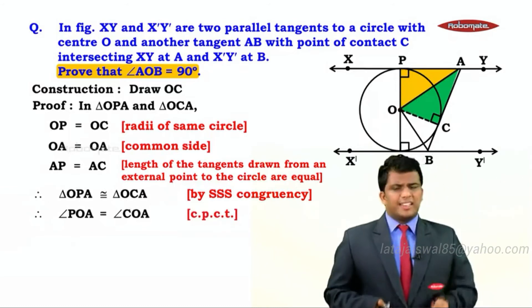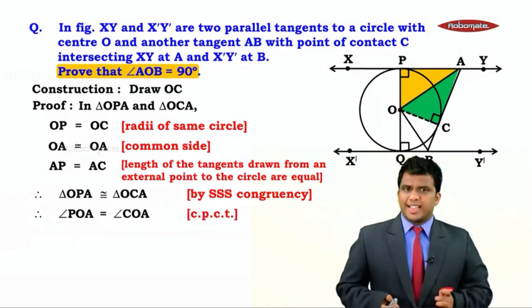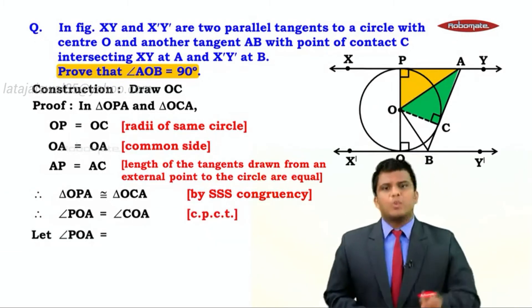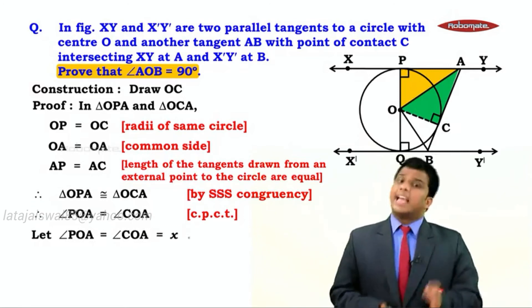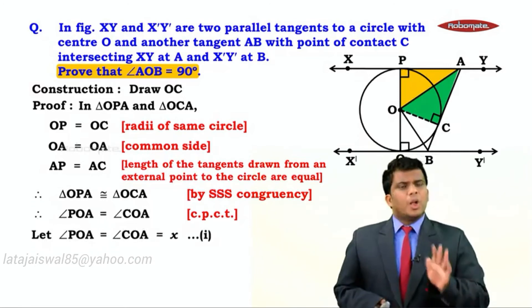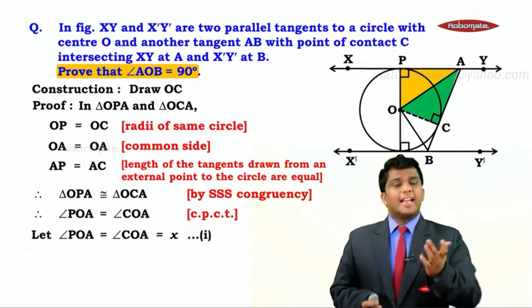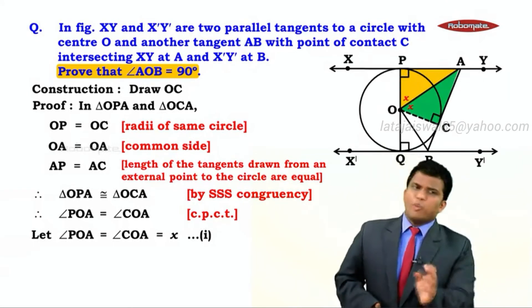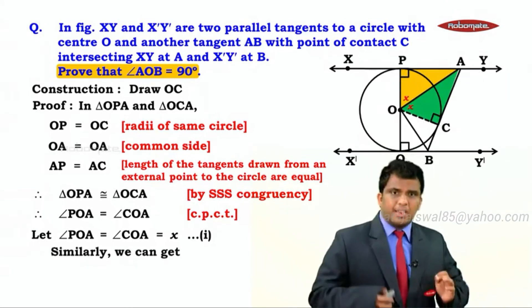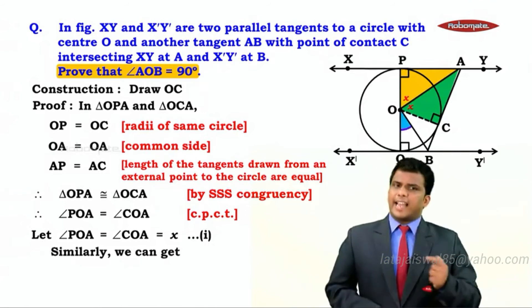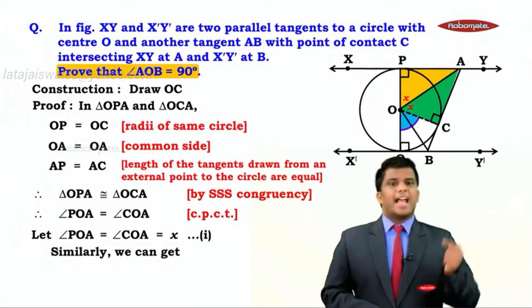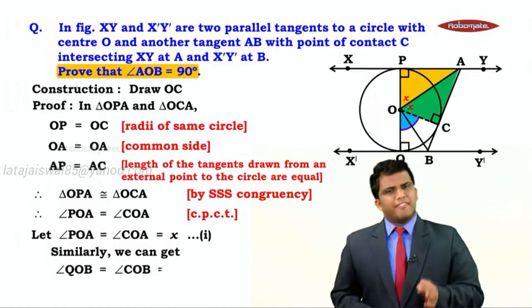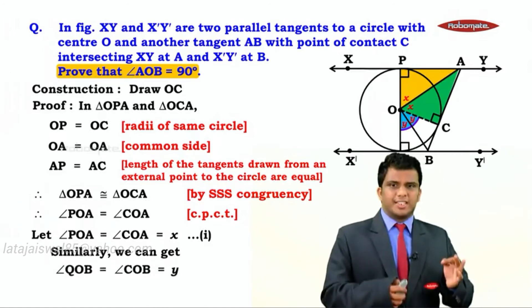For our convenience, let's assume some values for these angles. We take angle POA which equals angle COA to be X degrees. Let this be result number 1. We did a process and the same process can be repeated for the remaining two triangles also. Similarly, we can get that angle QOB and angle COB are equal and we assume the values to be Y degrees, result number 2.